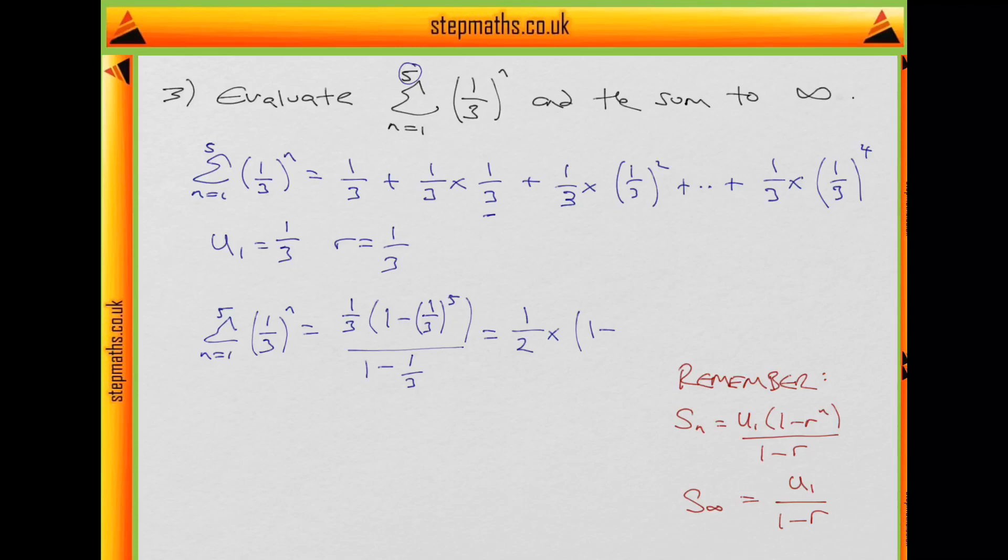And then 3 to the power of 5 is 243. And that is equal to 1 half times 1, let's put the 1 as 243 over 243, to make it more obvious, minus 1 over 243, which is 1 half times 242 over 243, which is 121 over 243.